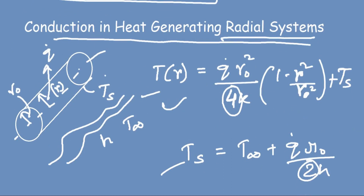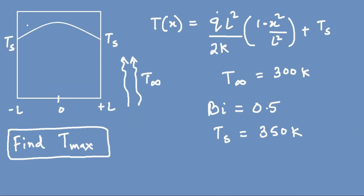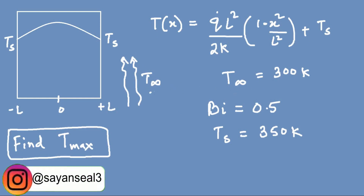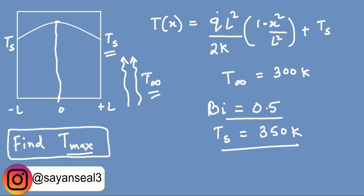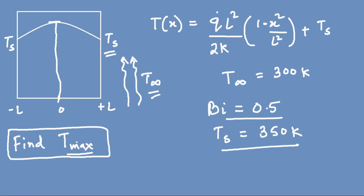Now we will solve a problem. A wall with heat generation is given. The temperature profile is T(x) = q_dot·L²/2k·(1 minus x²/L²) plus Ts. Given: T_infinity, Biot number Bi = 0.5, and Ts = 350 K. We need to find T_max. T_max occurs at x equals 0 because the profile is parabolic.